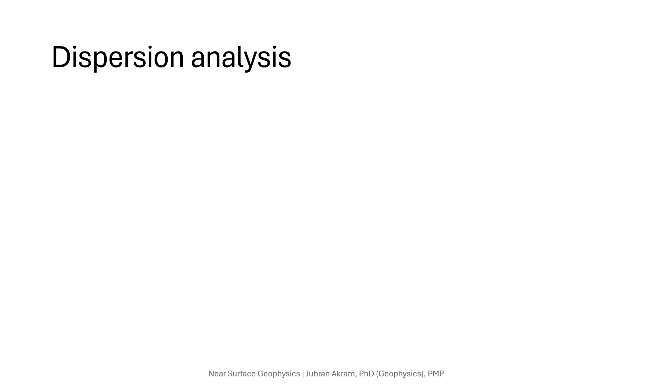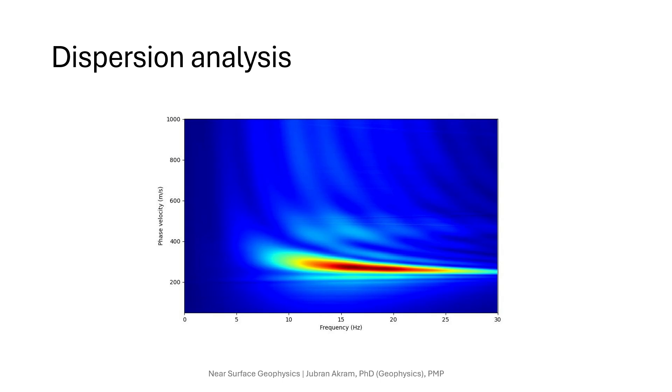The next step requires transforming data to generate dispersion curves, which is a plot of phase velocity versus frequency. We can use any of the f-k method, tau-p method, or the phase shift method. However we have used tau-p transform to generate this dispersion curve image.